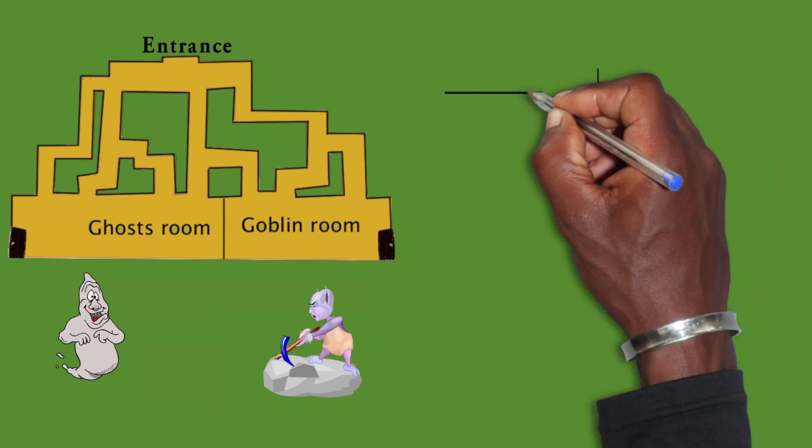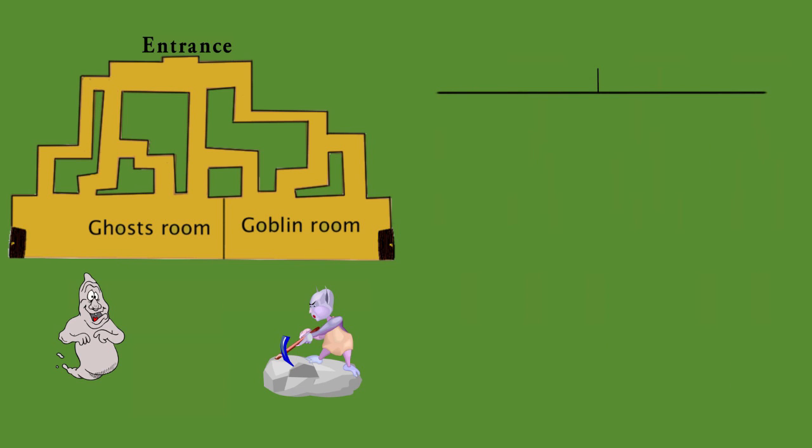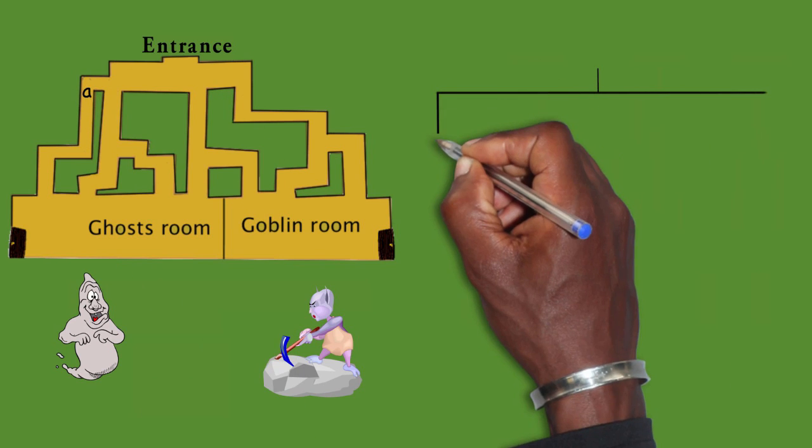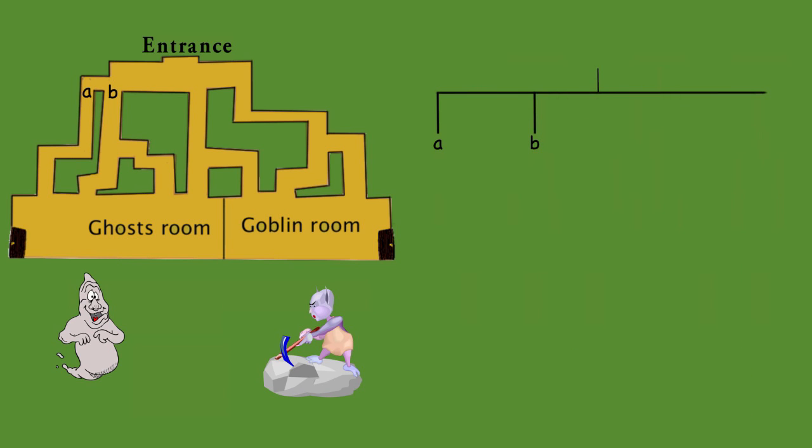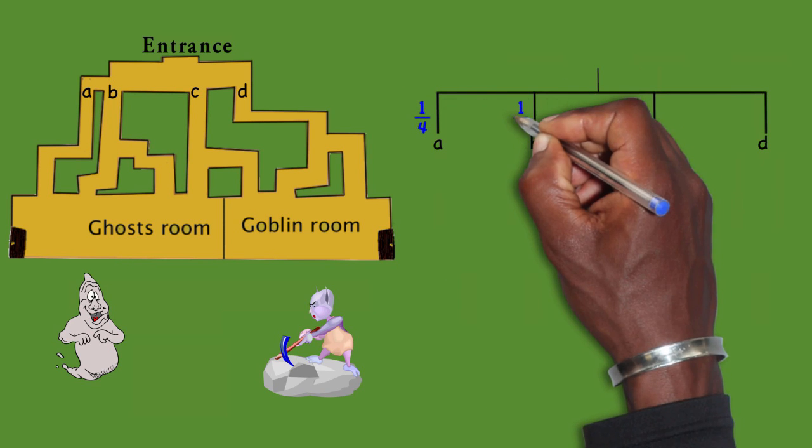First, I'm just going to start by labeling all the paths. Here's path A, path B, path C, path D. And since you are choosing these at random, you have an equal chance of choosing each of these. You have a 1 in 4 chance.